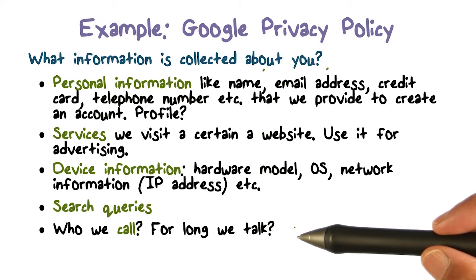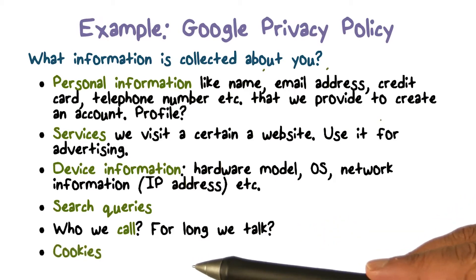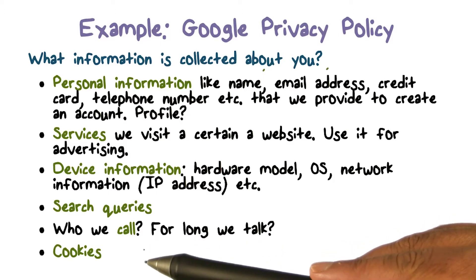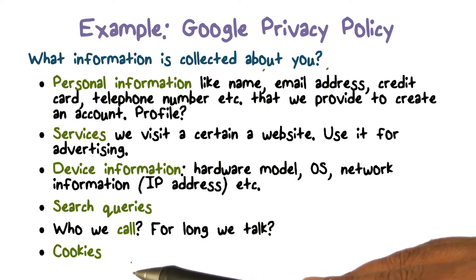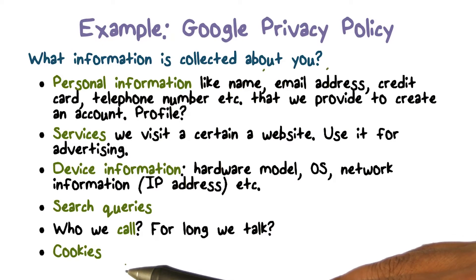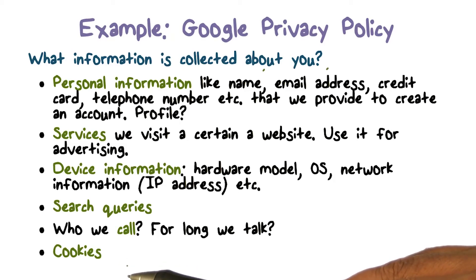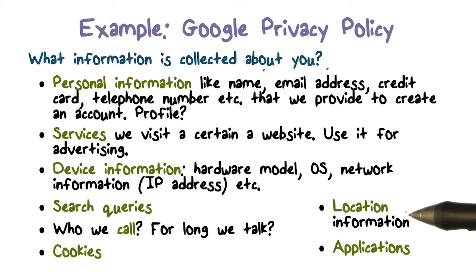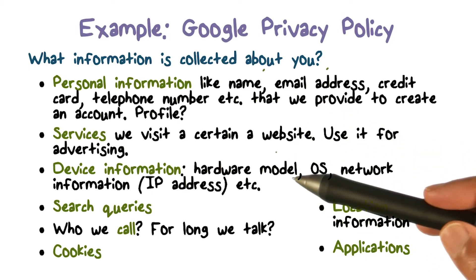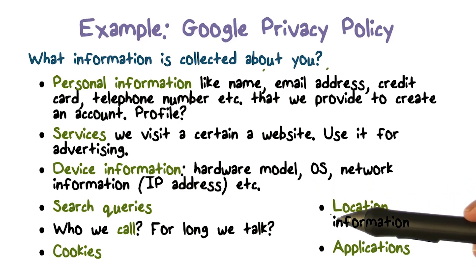If you use Google Voice, they would know who you call and how long you talk. Cookies are a more general mechanism by which websites keep track of various types of information, in particular when we visited them before. Google sets cookies to track your activities. They also collect your location information and what kind of applications you use. All this is what is collected — a privacy policy should say this is the information we collect about you, and this is an example of what Google collects.